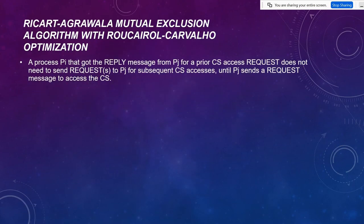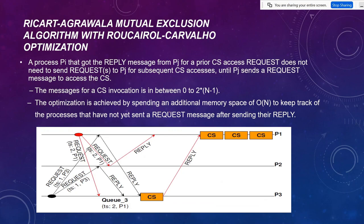Next is the Ricart-Agrawala mutual exclusion algorithm with Carvalho-Roucairol optimization. As we see, after replying back, process P1 completes its work and then checks if anyone wants the critical section. If no one is there, it continues further. In short, if no one needs access, P1 doesn't need to wait for any reply from other processes. It only leaves the critical section if P1 gets a new request.